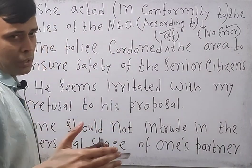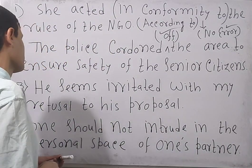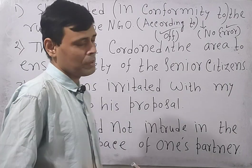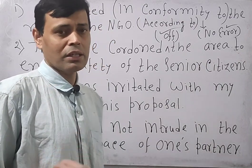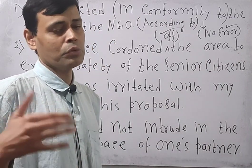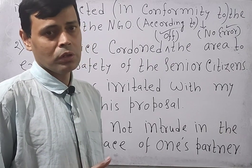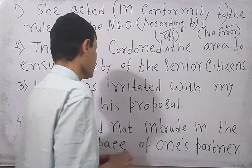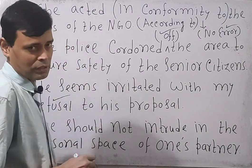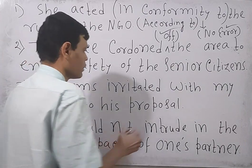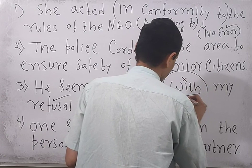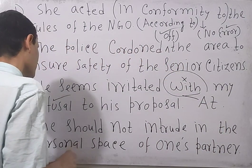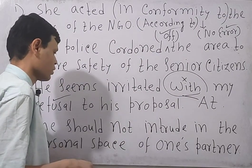Now go to the next: 'He seems irritated with my refusal to his proposal.' Whenever you are going to use the word 'irritated' in the case of a person, you can use 'with,' but in case of a thing, you need to use 'at.' Here 'refusal' is not a person — it is a thing. Therefore, instead of 'with,' it should be 'at.'